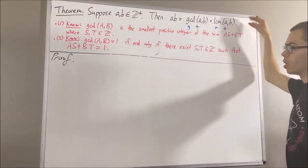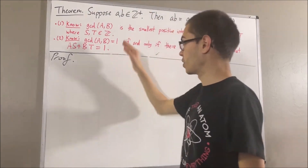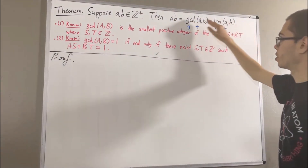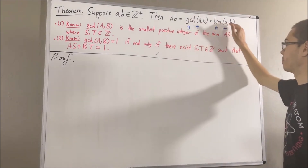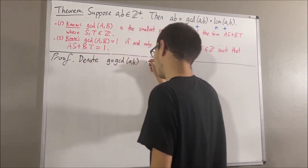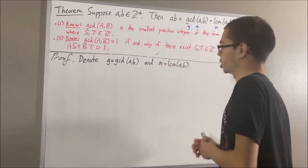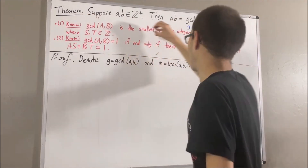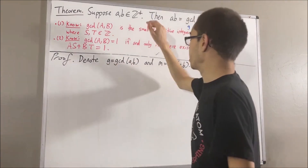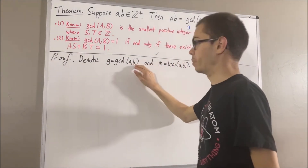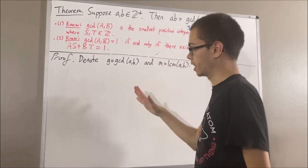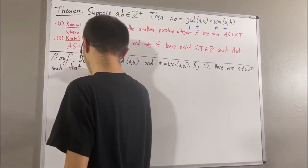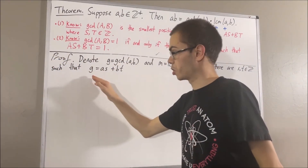Now let's get into proving this theorem. We are given positive integers A and B, and the goal is to prove this equation is true. We're going to denote the greatest common divisor of A and B by G, and the least common multiple of A and B by N. So the whole goal is essentially to prove that A times B is equal to G times N. To start, we know from our first fact that G is the smallest positive integer of the form AS plus BT, so there are integers S and T such that G is equal to AS plus BT.